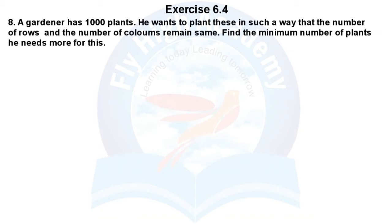The question is that a gardener has 1000 plants and he wants to put those plants in this way: the number of rows and number of columns are the same. Now we need to tell how many plants should be added for the number of columns and number of rows to be equal.